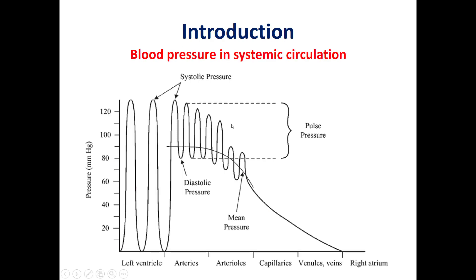As we see in this slide, how blood pressure changes in the systemic circulation. In the arterioles, arteries, and left ventricle, we have what we know as pulsations, which are AC signals. When we reach the capillaries, and even before the capillaries, we start to have only the mean pressure without pulsation.